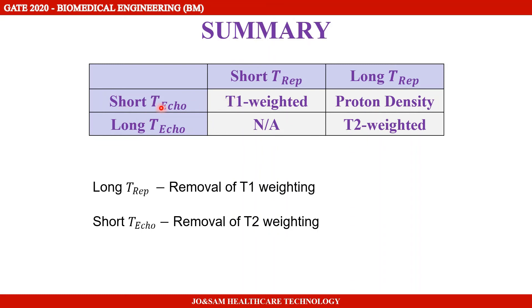The echo time (TE) and repetition time (TR) determine which type of image is produced. For T1 weighted images: short TE and short TR. For proton density weighted images: short TE and long TR. For T2 weighted images: long TE and long TR.